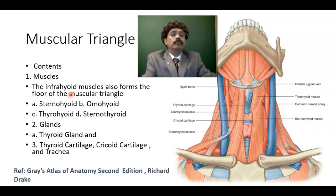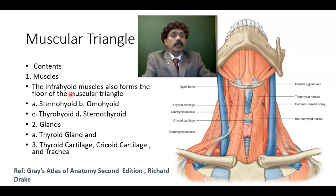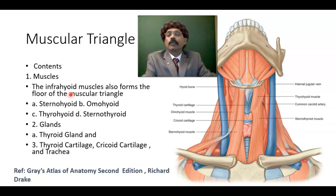What is the roof of the muscular triangle? The muscular triangle roof is formed by the skin and the superficial fascia, which contains the platysma muscle, the branches of the transverse cervical nerve, and the cervical branch of the facial nerve. The investing layer of the cervical fascia also forms the roof. These muscles form the floor of the muscular triangle.